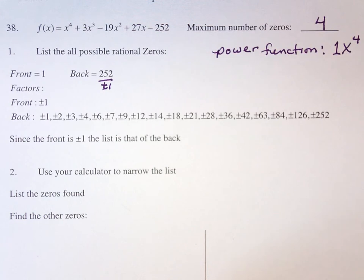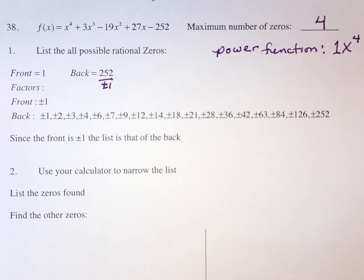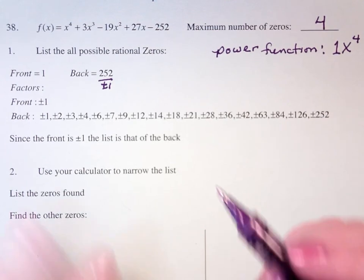If I can find two zeroes, then I can take the second zero, take the third degree polynomial, reduce it down to a quadratic. Once it's down to a quadratic, I can use the quadratic formula on it. So that's the process.